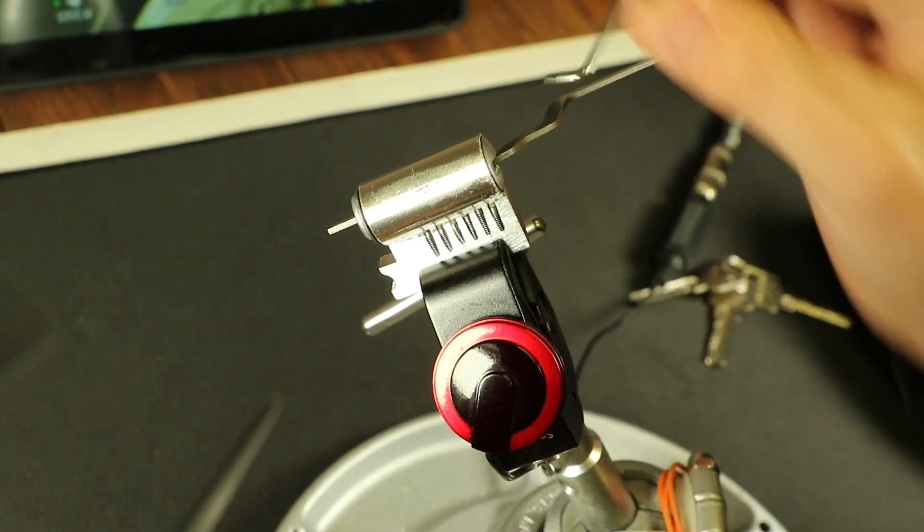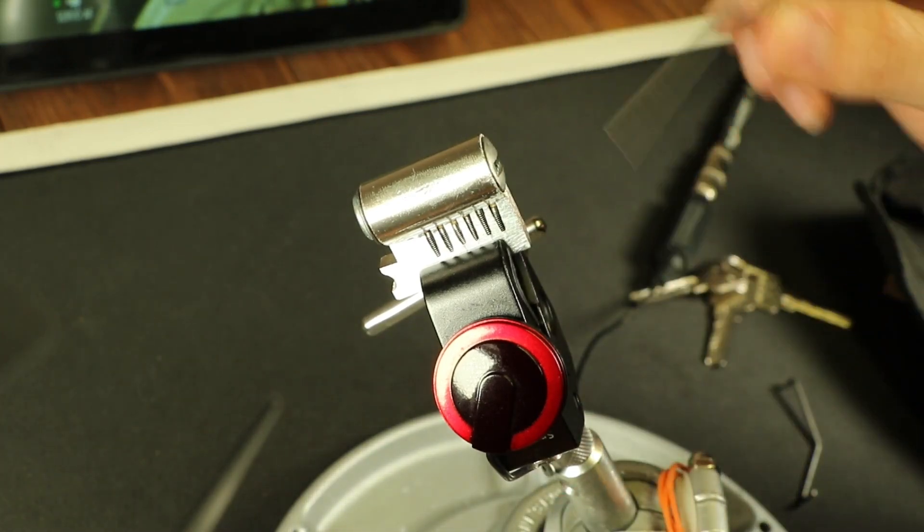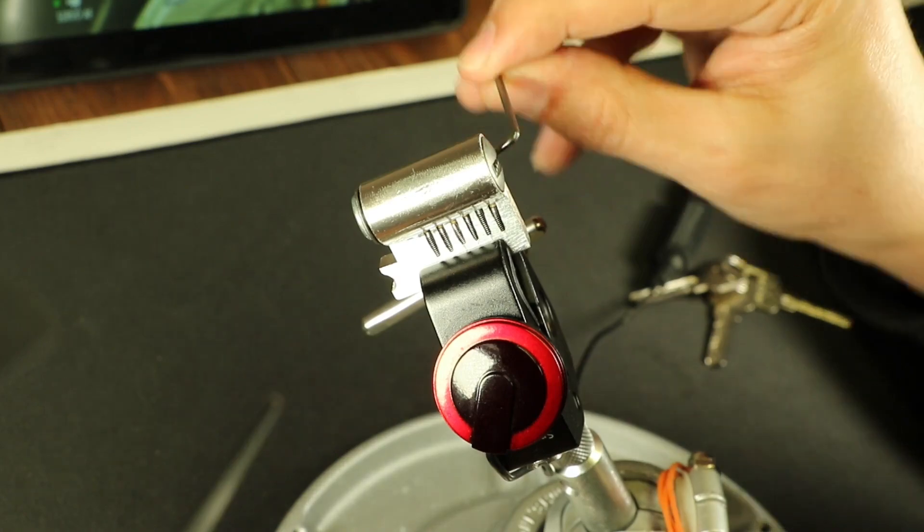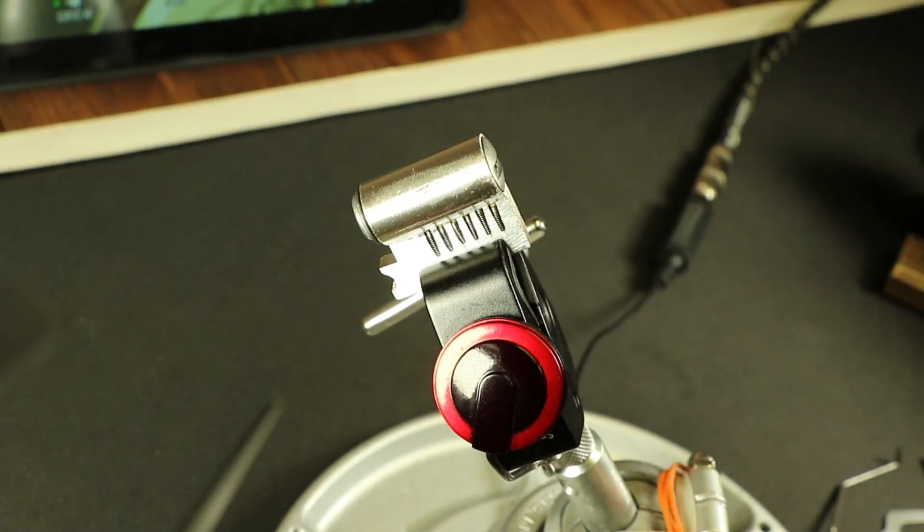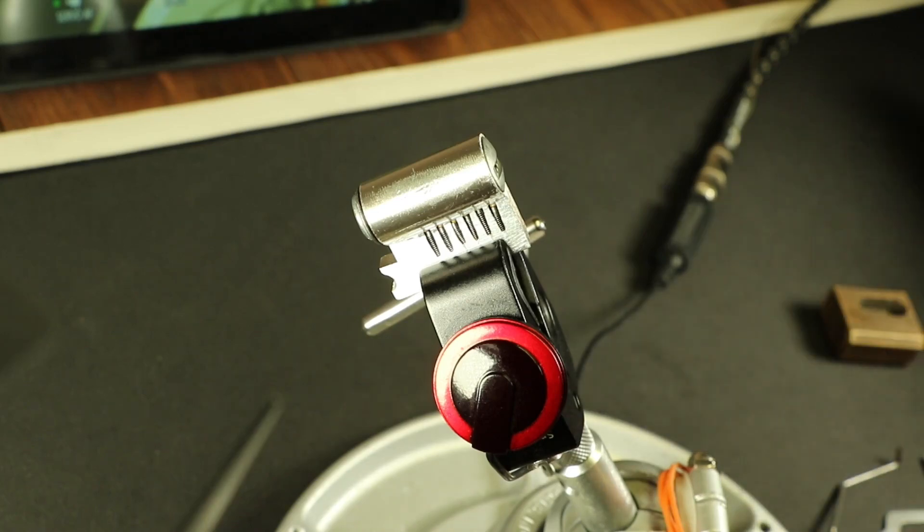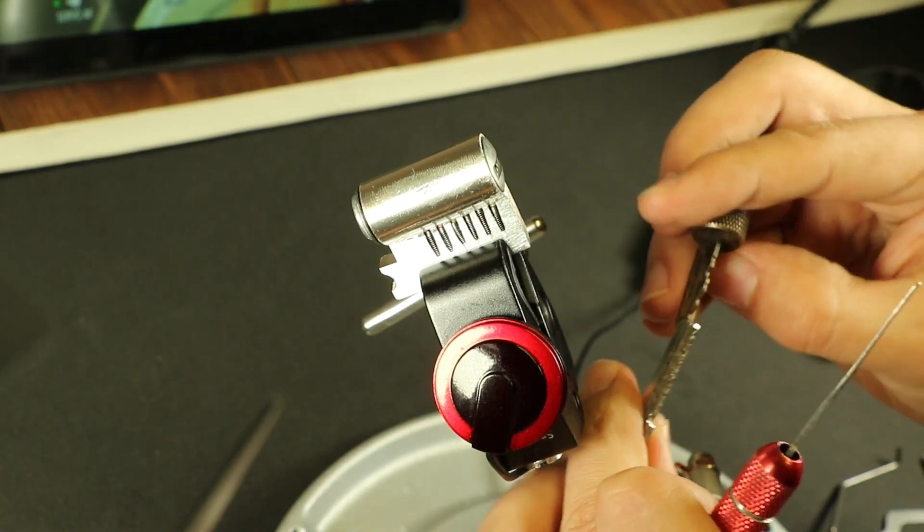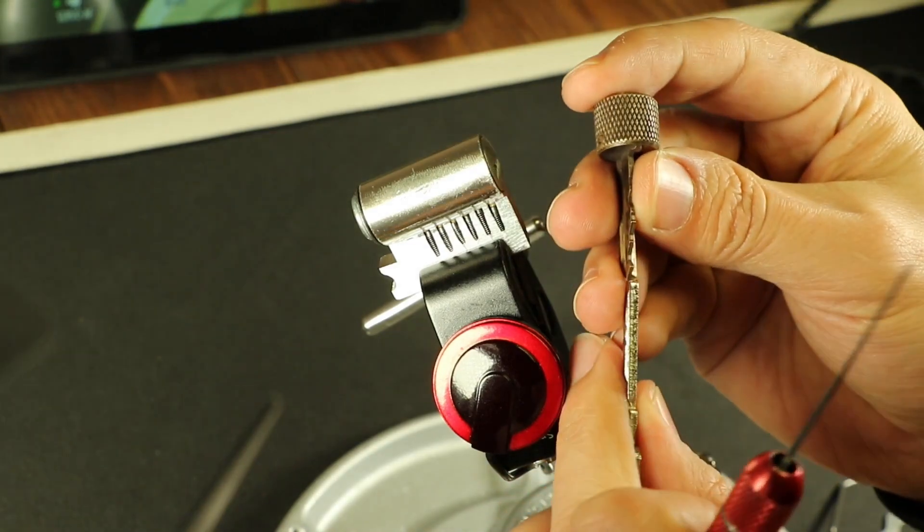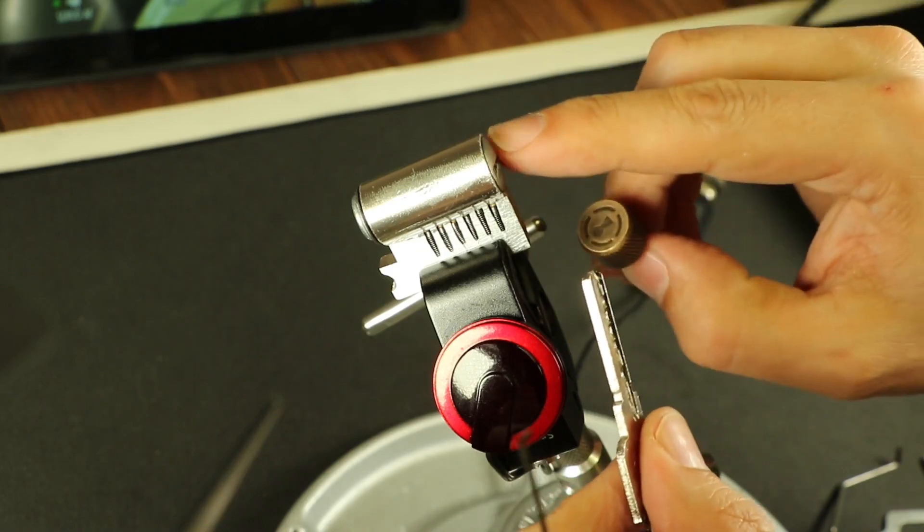So put that down one side of it. This is my tensioner, just like I had this other one. All it's doing is putting rotating force. It's just fat because if I try to use this one, it would just rotate in the keyway.